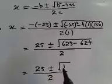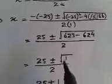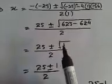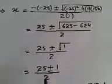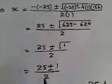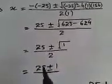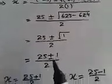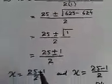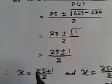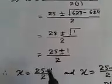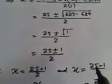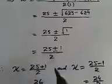Since 1 can be a perfect square, the square root cancels out, giving us x equals 25 plus or minus 1, divided by 2. So we write two cases: x equals 25 plus 1 divided by 2, and x equals 25 minus 1 divided by 2.